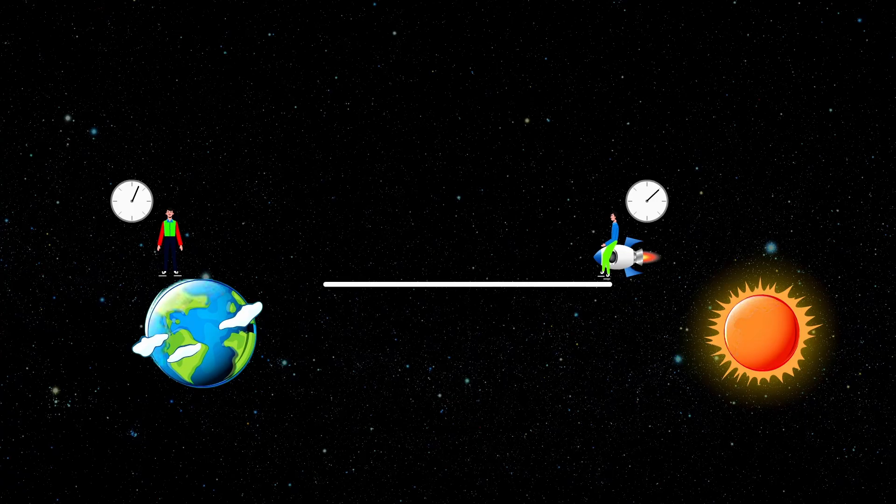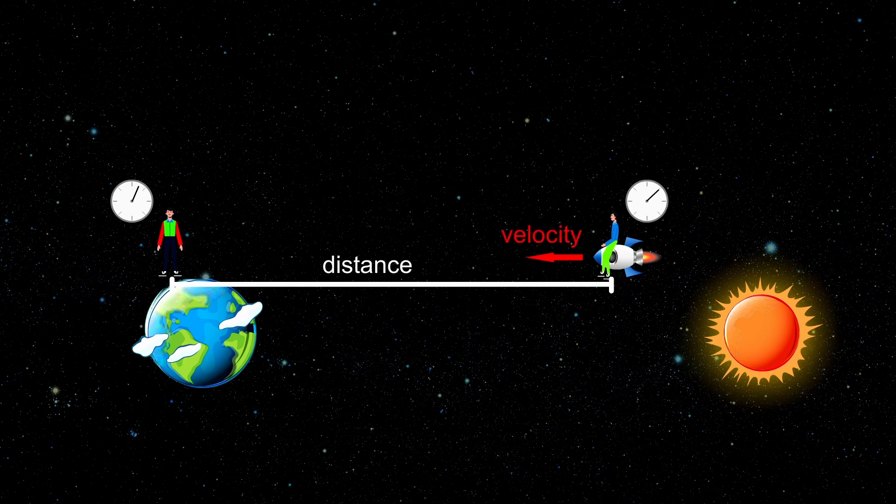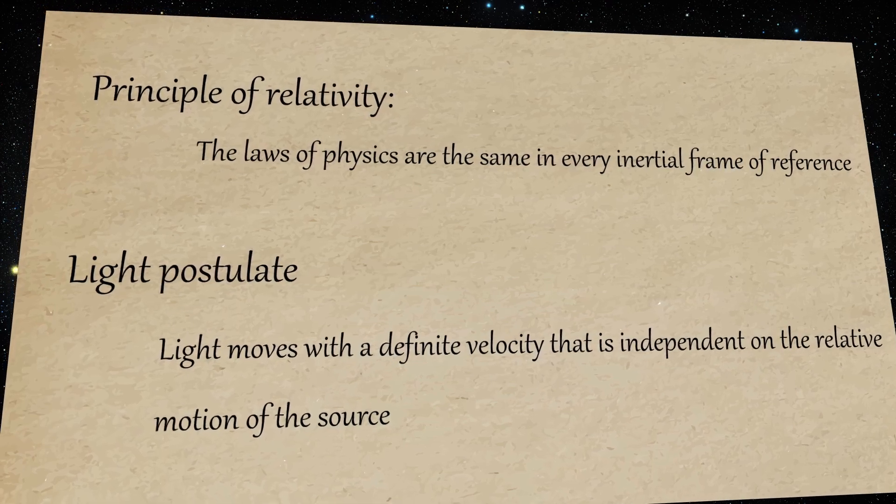But this is not what an observer would see with his own eyes. This is what he would figure out based on the distance, velocity and the postulates of special relativity.